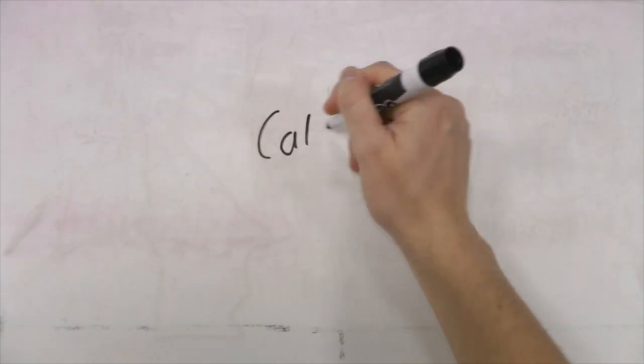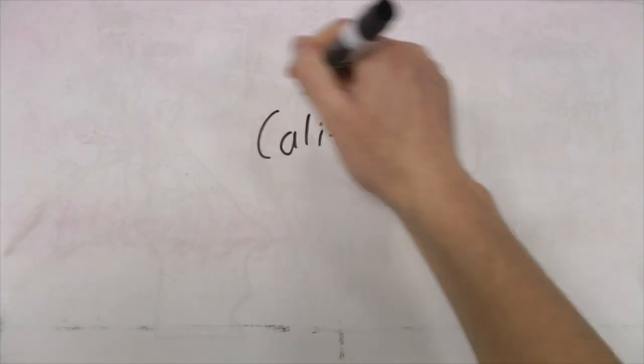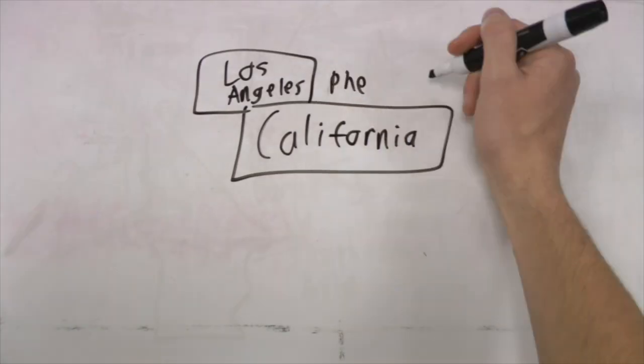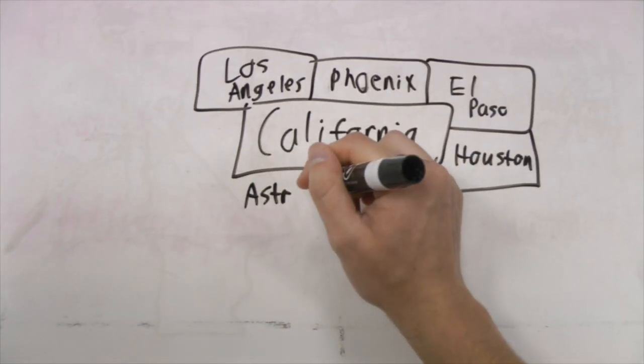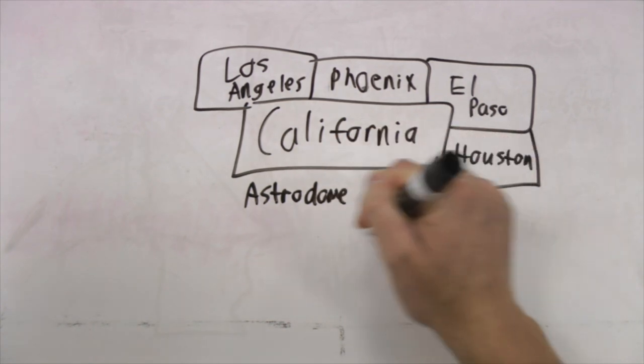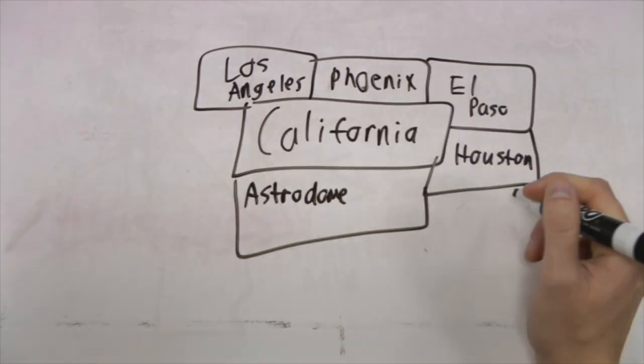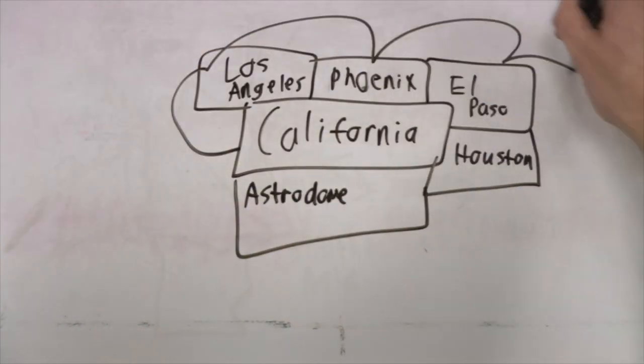And you finally come up across the coast of California, and look for those friendly things. Los Angeles, and Phoenix, and on across El Paso, and there's Houston. There's home. And you look, and sure enough, there's the Astrodome. And you identify with that. You know, it's an attachment.